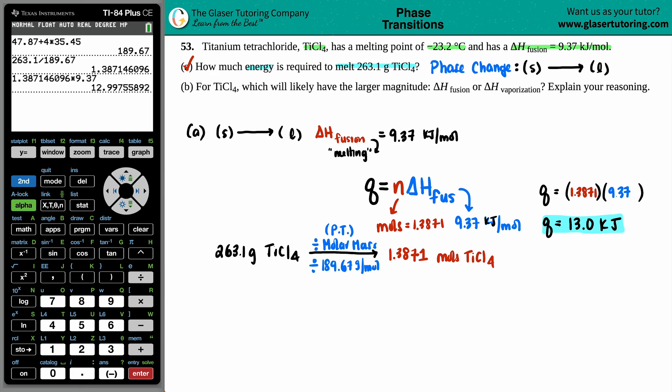Letter B. For TiCl4, which will likely have the larger magnitude, the delta H of fusion or the delta H of vaporization and explain your reasoning? Good question.